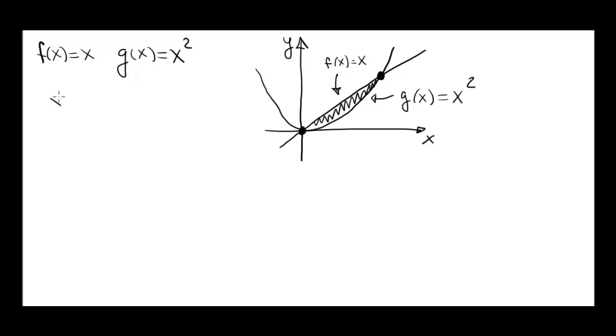So we set them equal, x equals x squared. We can also do it by inspection, 0 equals x squared minus x. Factor out x, and then x times x minus 1. We see the x coordinates are 0 and 1.